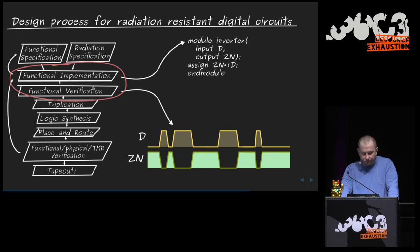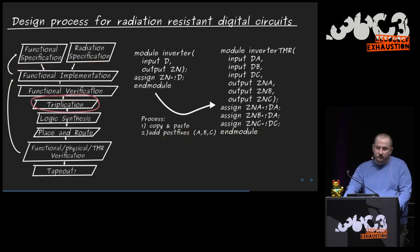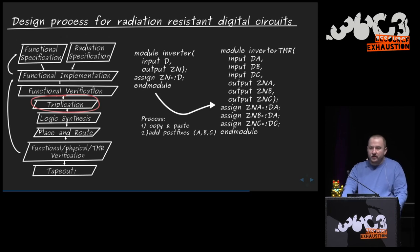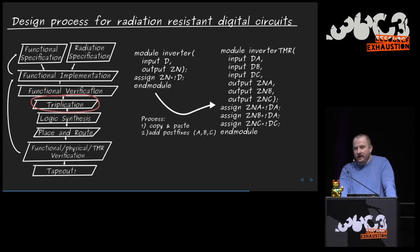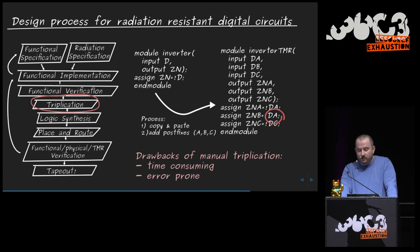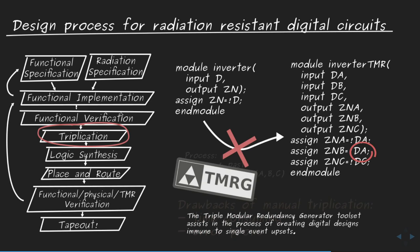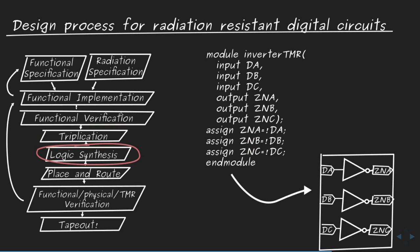Parts of the circuit to be protected from radiation effects are selectively chosen — for example, using triplication. The TMRG tool developed at CERN automates the triplication process on Verilog input, producing Verilog output. This eliminates the time-consuming and error-prone process of manually copy-pasting code three times with A, B, C suffixes. After triplication, all simulations are re-run to confirm correct behavior.